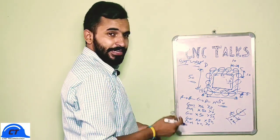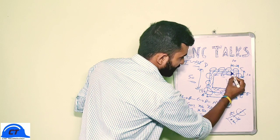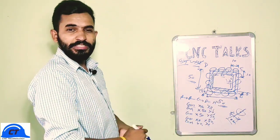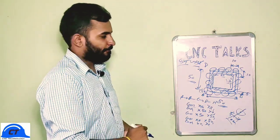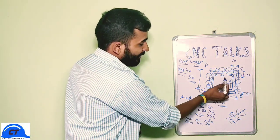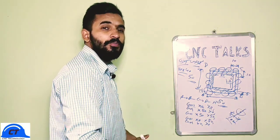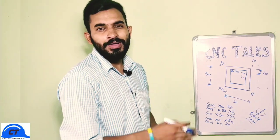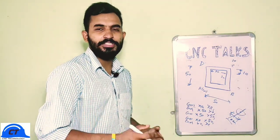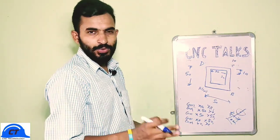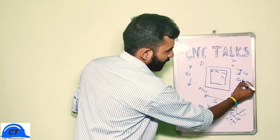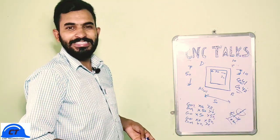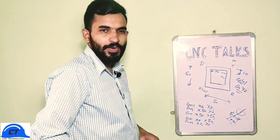Since the diameter of our tool is 10mm and it moves along the center line, it will only remove 5mm of material. The result will be a plate of 40 by 40, but we need to make a plate of 30 by 30. To resolve this problem we need to give compensation in the program. There are two codes: first is G41 and second is G42.